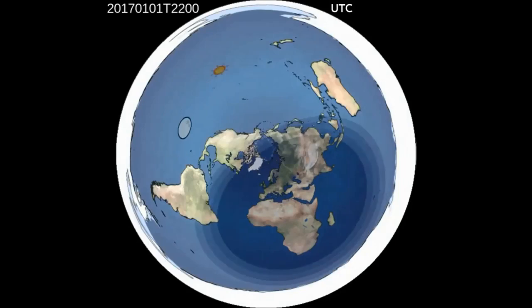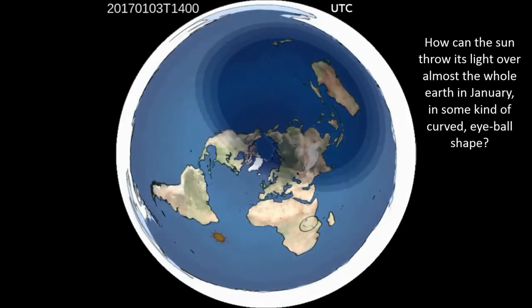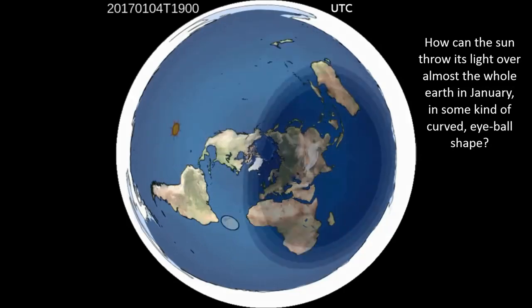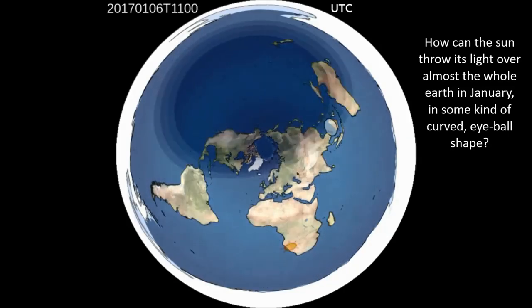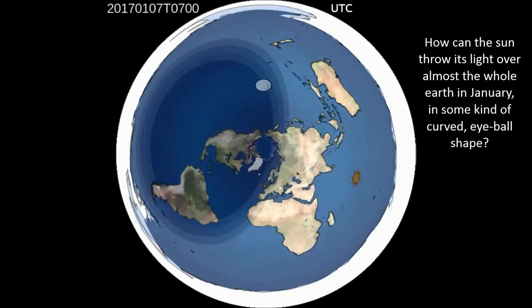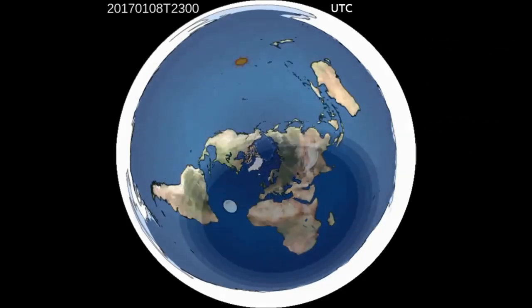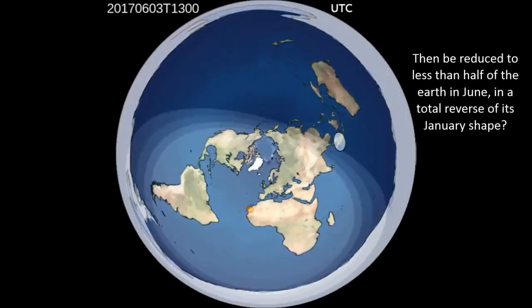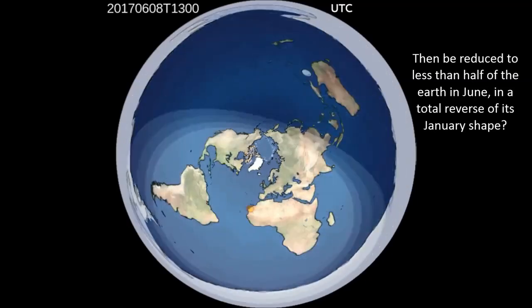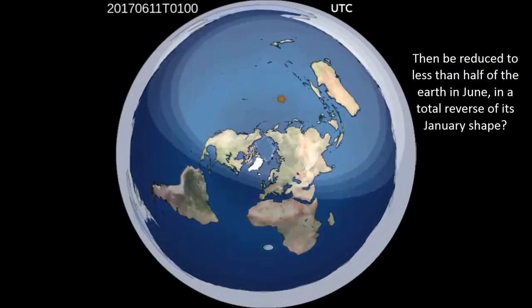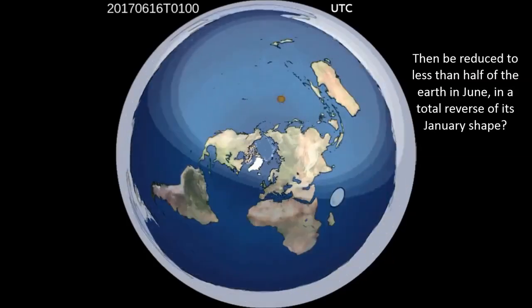Some people do recognize that there's a problem with the daylight hours on the disc model. So we get animations like this. And clearly, what is the sun doing? You've got a dark patch and then a light patch behind it. And then it goes to an egg shape in the June solstice. And people will look at it and go, oh, that's how it works. Because it is actually giving the right daylight hours there, believe it or not.